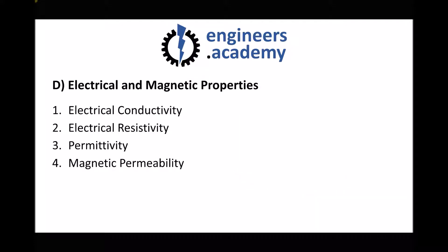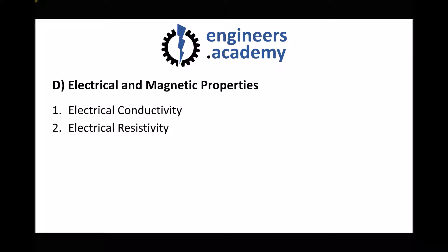Finally we have our electrical and magnetic properties. First we have electrical conductivity and electrical resistivity — much like thermal conductivity and resistivity, these are inverses of each other. What we're referring to is how readily a material passes electricity: if we put electrons into the left-hand side of a piece of conductive material, we'll receive electrons out the other side.